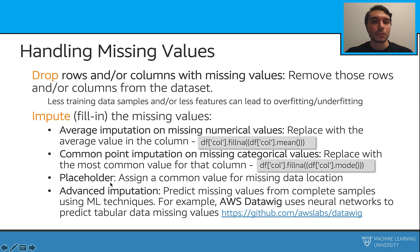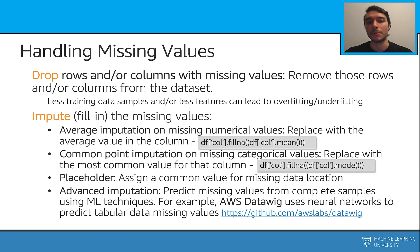We can also use a placeholder for this. For example, if we have a missing value, we can just put minus one there for the numerical values. Or maybe for a categorical variable, we can create another category called 'missing'. So these are all some different kinds of approaches.